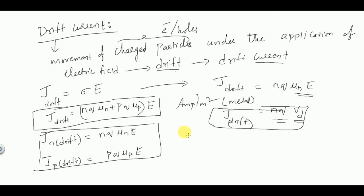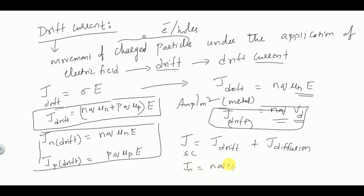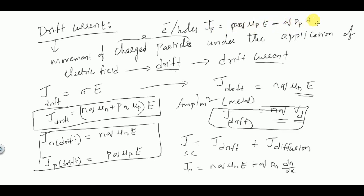If asked about total current density inside a semiconductor, the total current density is due to both drift and diffusion currents. Total current density = drift current density + diffusion current density. For electrons: J_n = nqμ_n · E + qD_n · dn/dx. For holes: J_p = pqμ_p · E − qD_p · dp/dx. These are the concepts of drift and diffusion current densities in semiconductors.